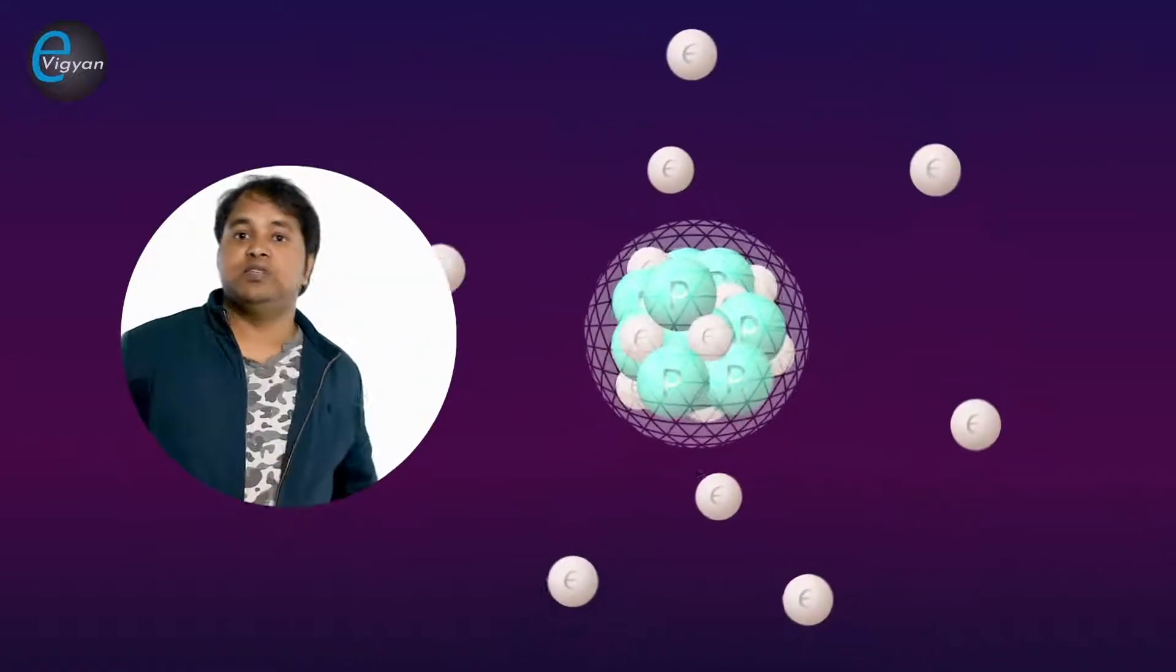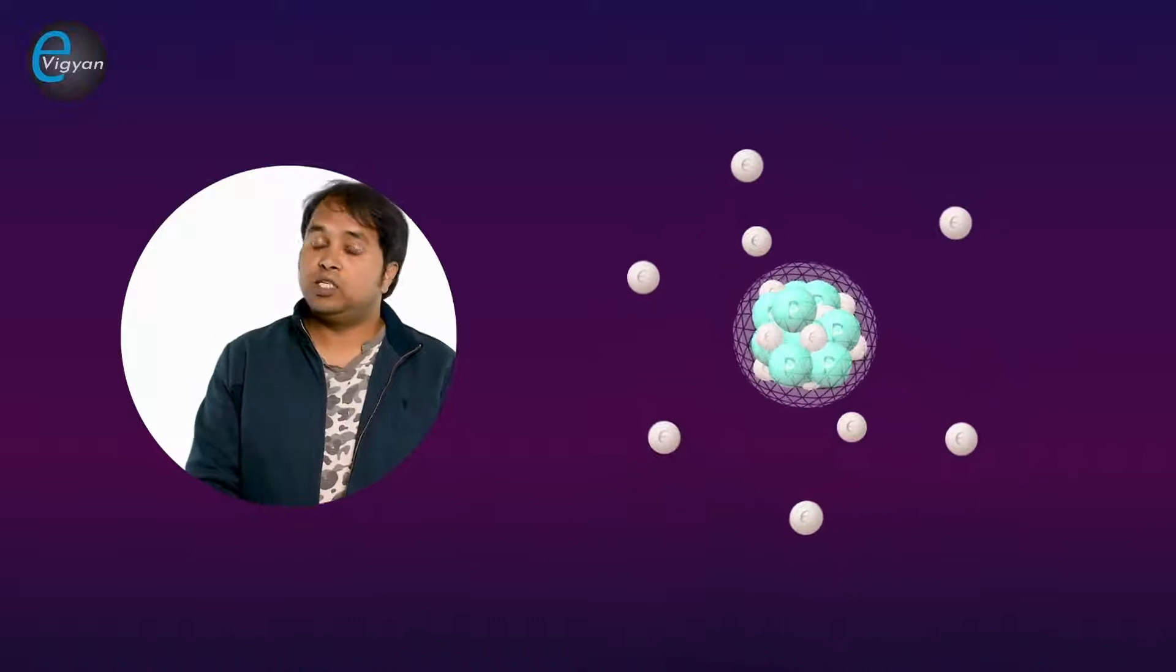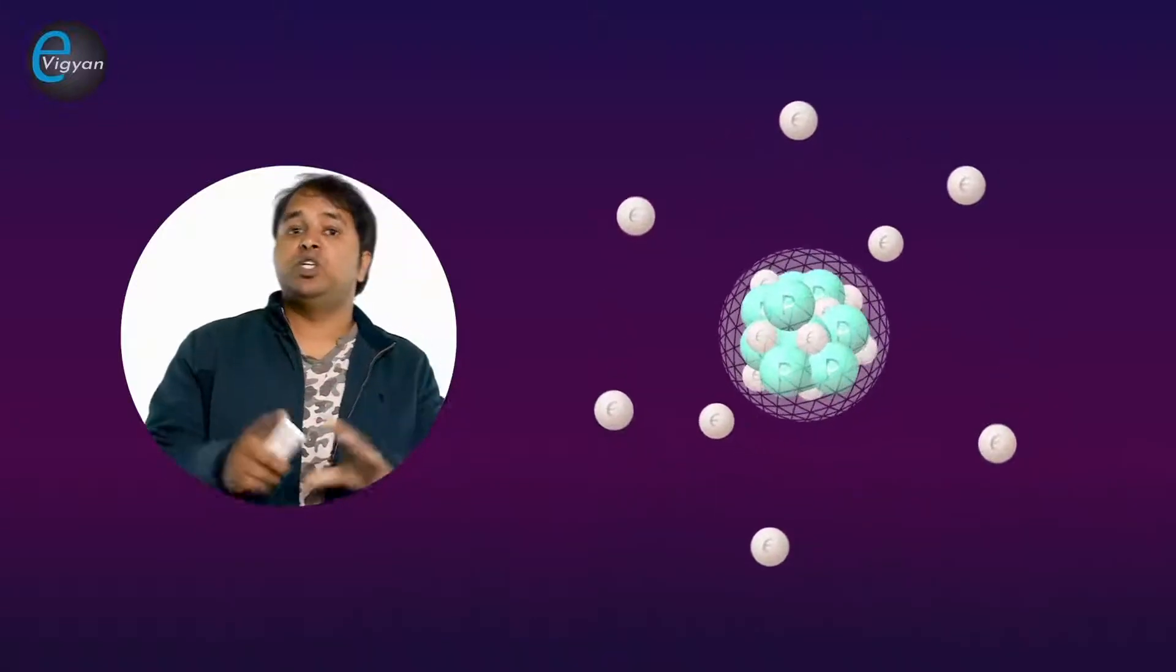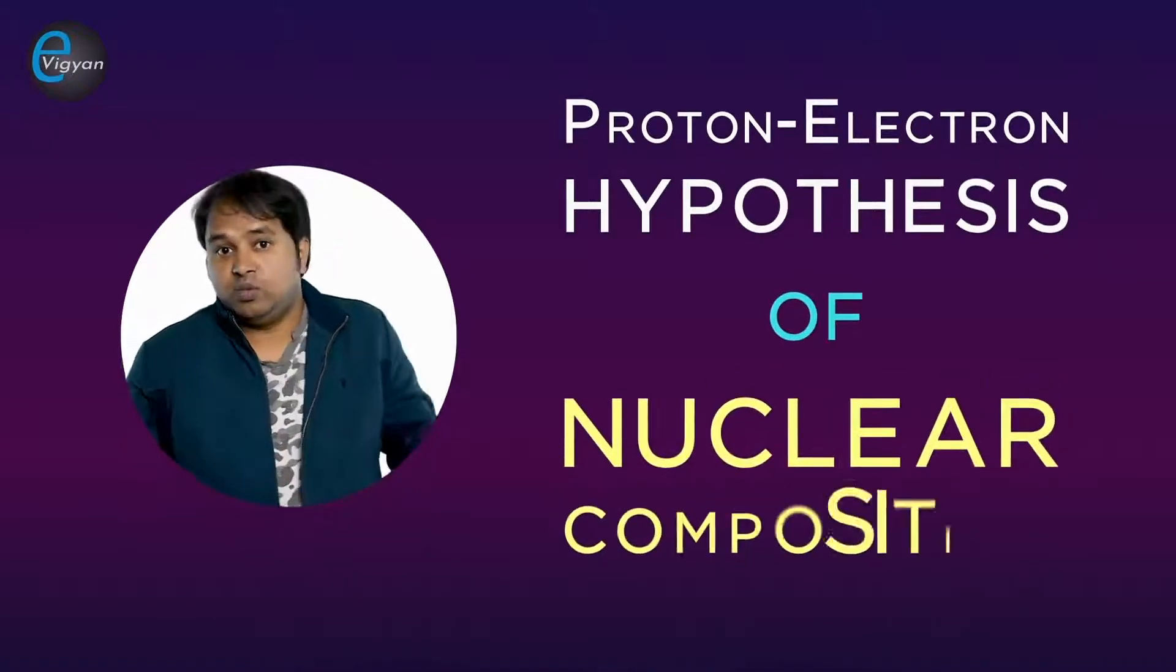Also, the presence of some electrons in the nucleus and rest as peripheral around the nucleus exhibit the dual role of electrons in an atomic structure, which is difficult to understand. So this is all about the problems behind the proton-electron hypothesis of nuclear compositions.